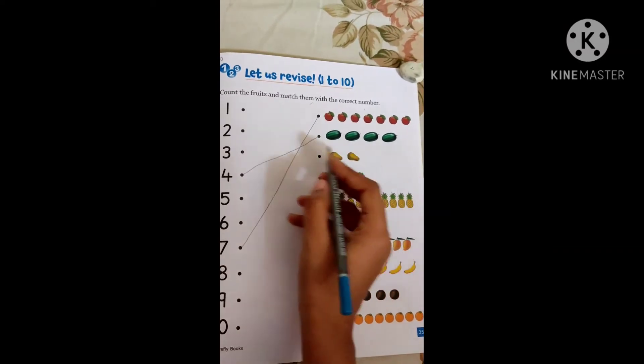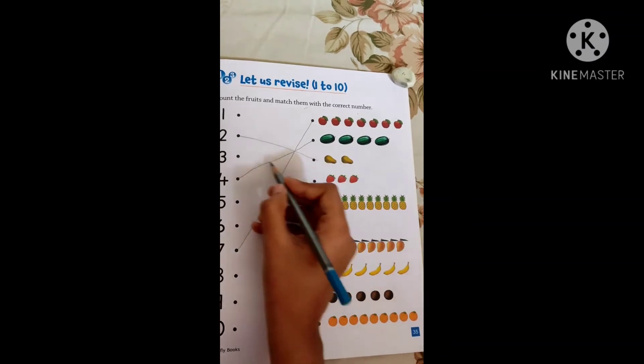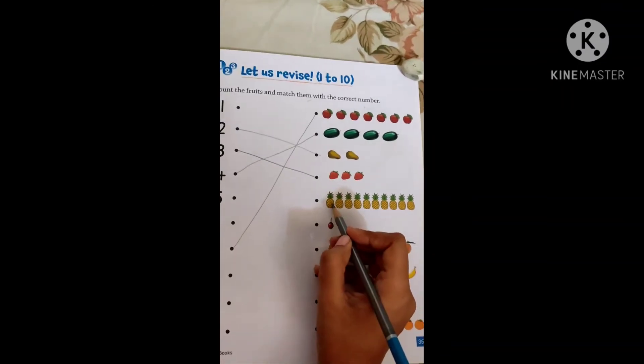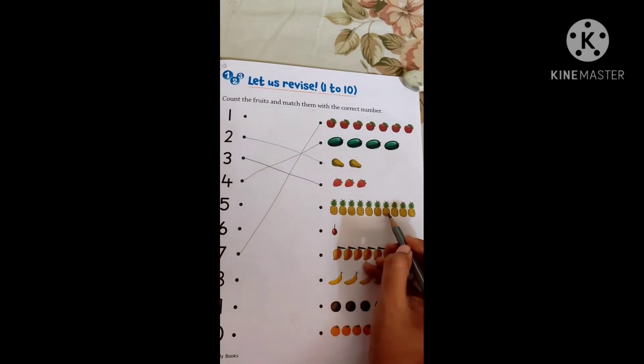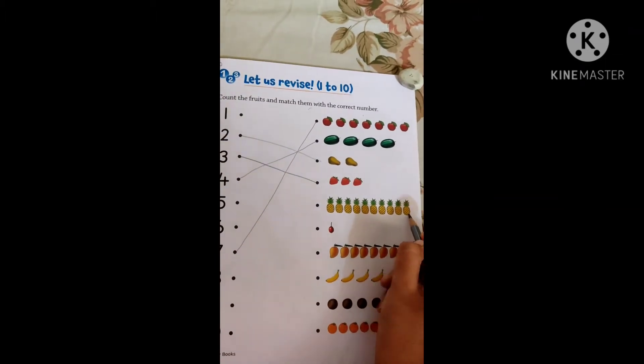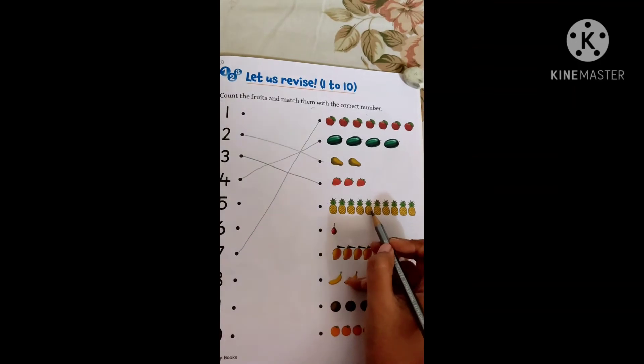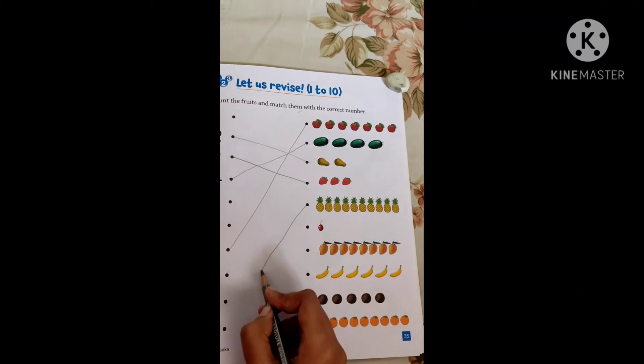Papaya. 1, 2. Pineapple. 1, 2, 3, 4, 5, 6, 7, 8, 9, 10. How many pineapples? Again count. 1, 2, 3, 4, 5, 6, 7, 8, 9, 10. So let us go and match to the number 10.